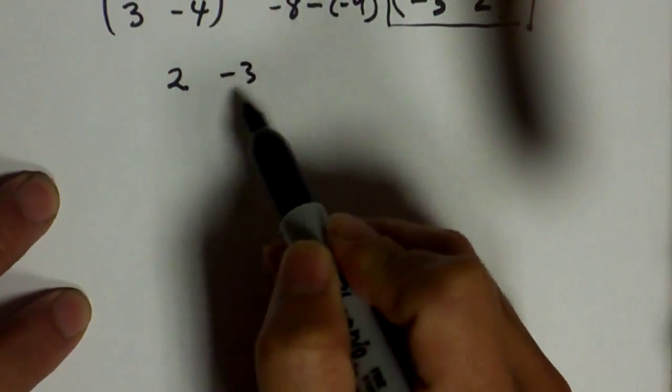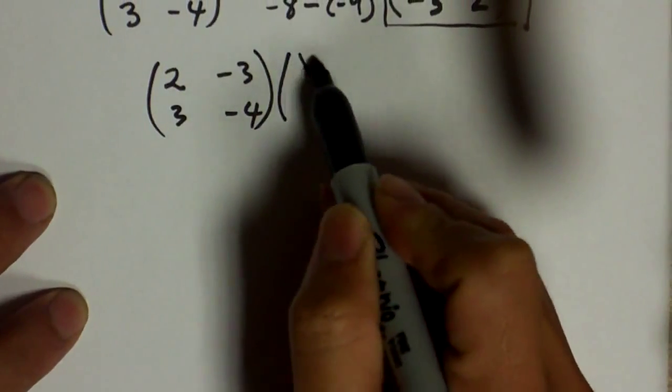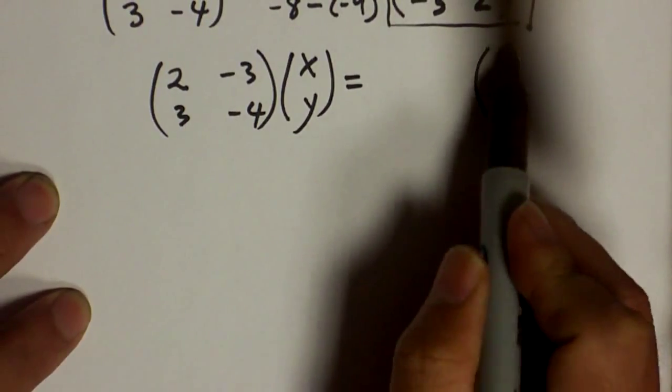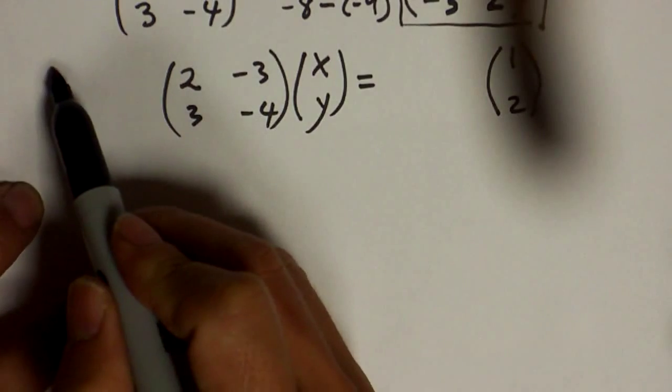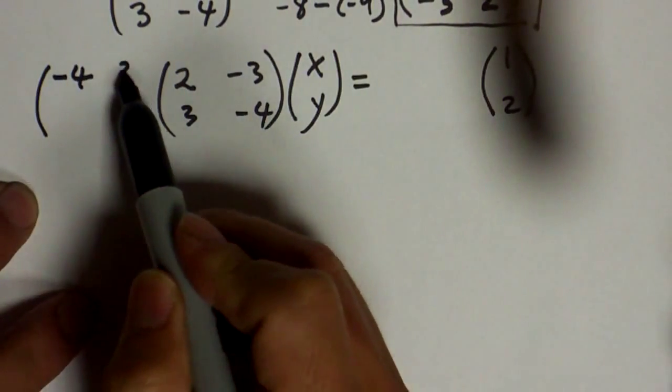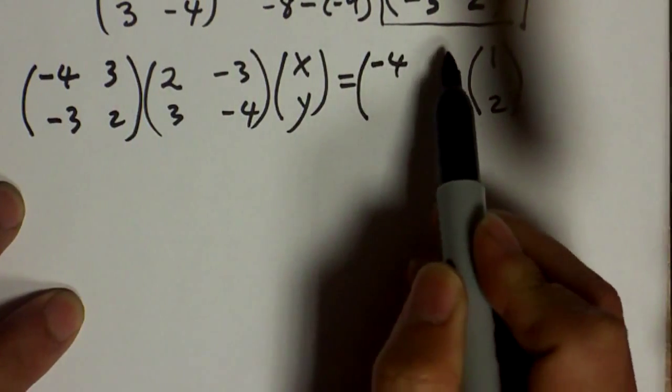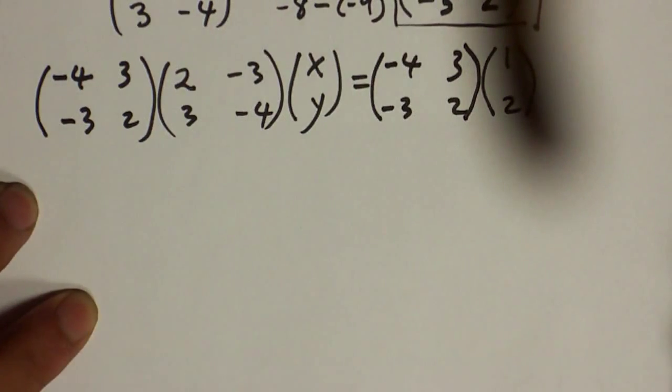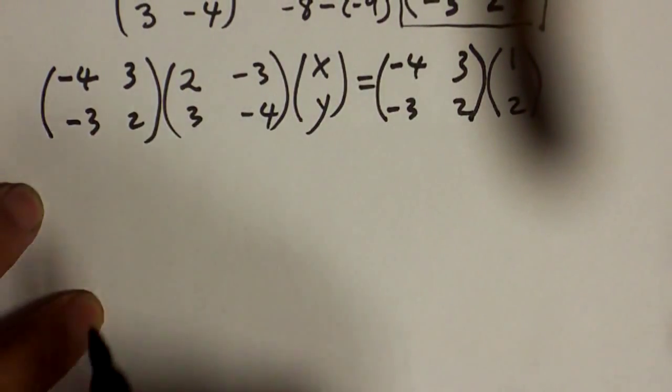Here's the equation: the matrix [2, -3; 3, -4] times [x; y] equals [1; 2]. And you're going to multiply that inverse matrix [-4, 3; -3, 2] to both sides. Because we are multiplying the same thing to both sides, these two sides should still be equal.